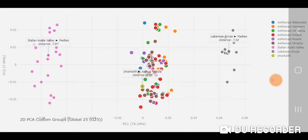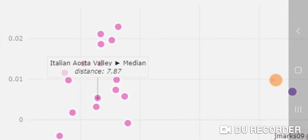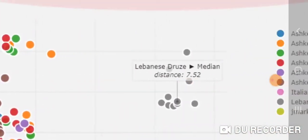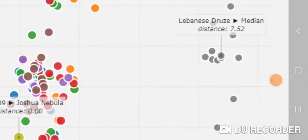Those are the two populations I used. You can see the Ashkenazi cluster is somewhat in between Lebanese Druze and Italian West Valley. The median distance I get is 7.87 for Italian West Valley and 7.52 for Lebanese Druze. You can see there's Italian West Valley, Lebanese Druze, and the Ashkenazi cluster.